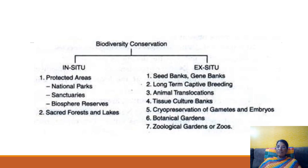You have two types of conservation methods. Under in-situ conservation, there can be different methods. One is a people-oriented and traditional method, that is sacred forests and lakes, and another, which is very important, is protected areas.